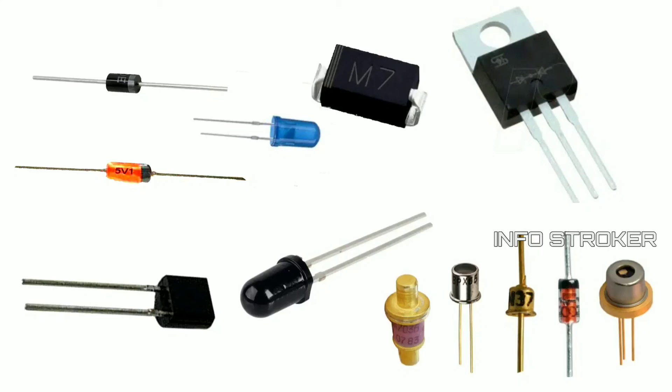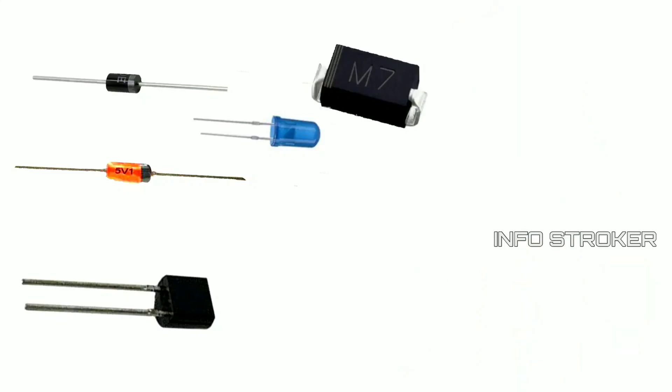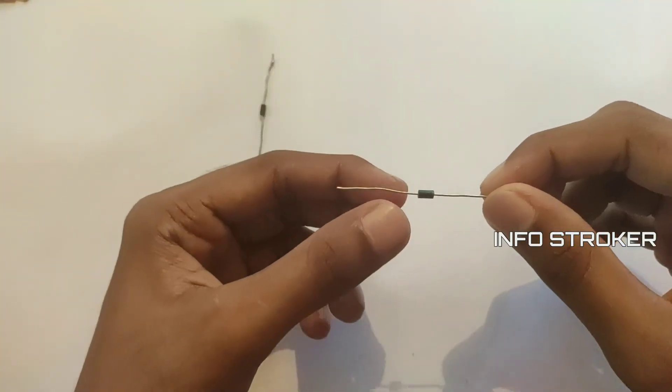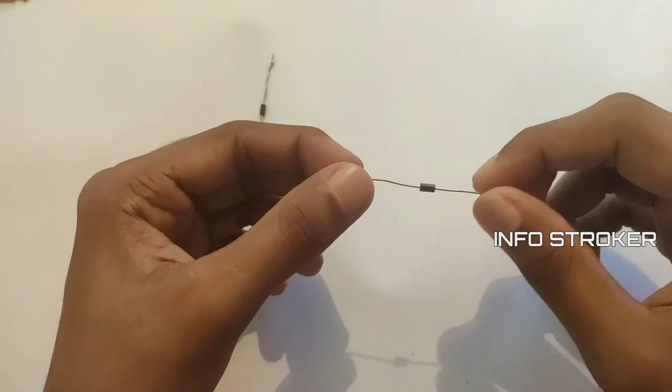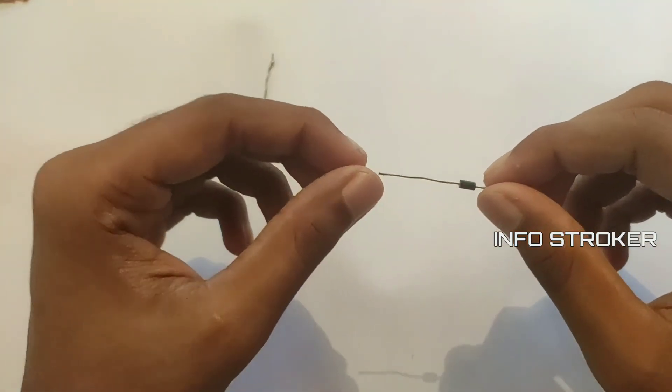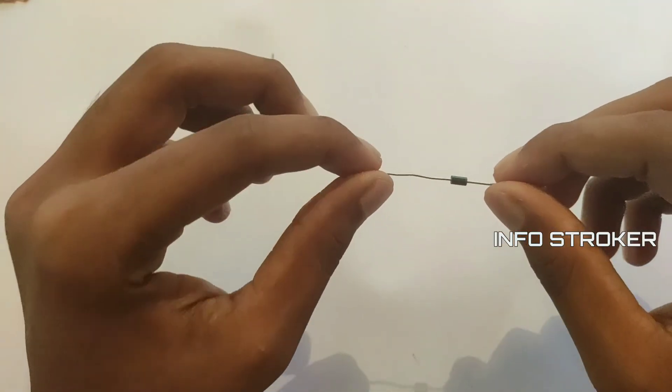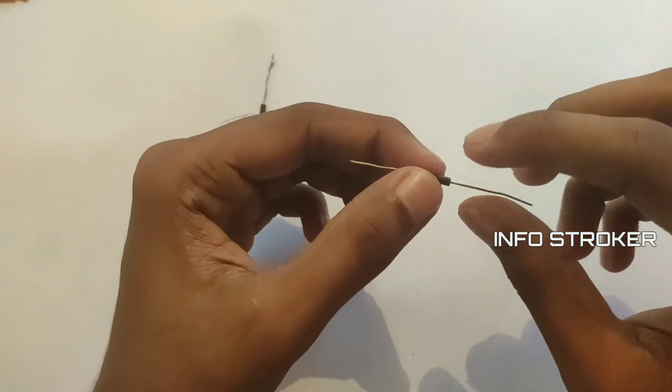There are small signal diodes, large signal diodes, also Zener diodes, light-emitting diodes, laser diodes, Schottky diodes, and constant current diodes. These are used in electronic circuits.